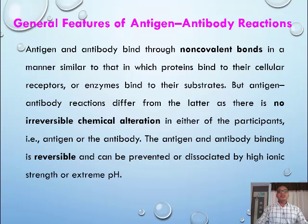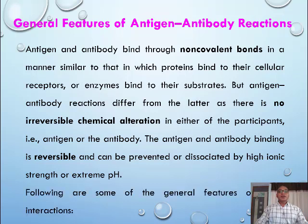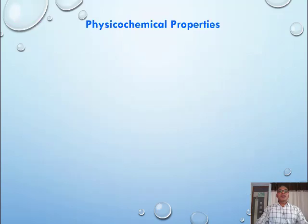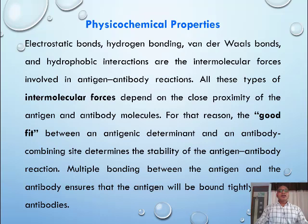Antigen-antibody reactions differ from enzyme-substrate reactions as there is no irreversible chemical alteration in either of the participants — that is, the antigen or the antibody. The antigen and antibody binding is reversible and can be prevented or dissociated by high ionic strength or extreme pH. Physicochemical properties: electrostatic bonds, hydrogen bonding, van der Waals bonds, and hydrophobic interactions are the intermolecular forces involved in antigen-antibody reactions.